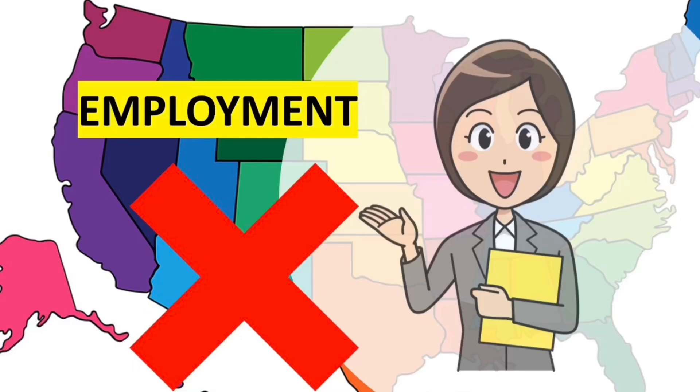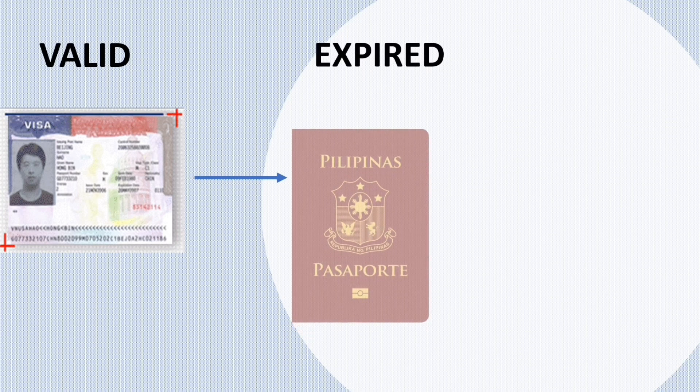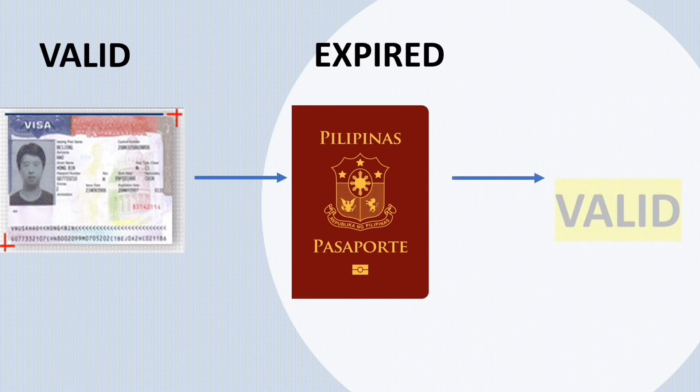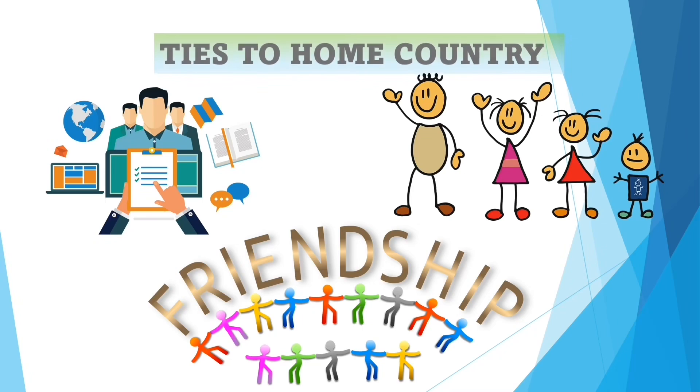Important reminders when applying for a B1/B2 visa: an individual on a visitor visa is not permitted to accept employment or work in the U.S. You are not guaranteed visa issuance, so do not make final travel plans or buy tickets until you have a visa. Also, a valid U.S. visa in an expired passport is still valid unless cancelled or revoked — you may use it along with a new valid passport for travel and admission to the U.S. The most important thing you can provide is proof of your ties to your home country.